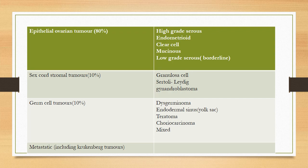Germ cell tumors include dysgerminoma, endodermal sinus tumors, teratoma, choriocarcinoma, and mixed tumors. They arise from all layers of the early embryo — ectoderm, endoderm, mesoderm, yolk sac, and the surrounding syncytiotrophoblast and cytotrophoblast. There are also distant tumors — from colon, stomach, and pancreas — that can present as deposits on the ovaries; these are called Krukenberg tumors.